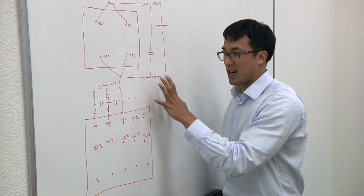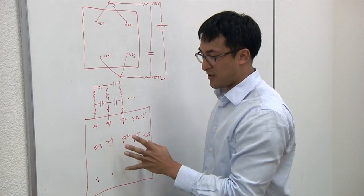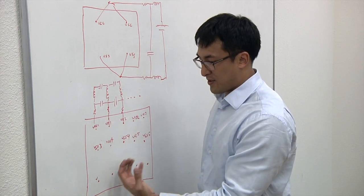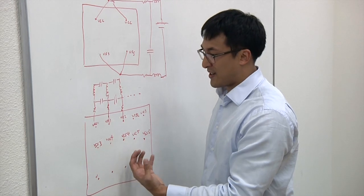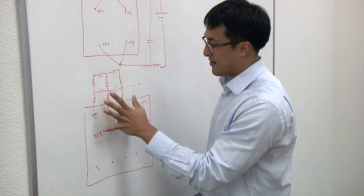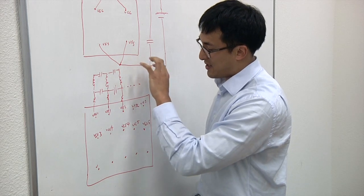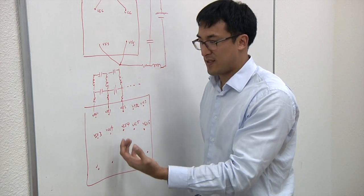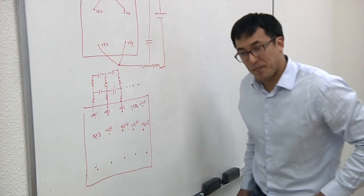So when you actually hook up a distributed package model to your die and we run a simulation, based on the currents that are drawn by the devices, those devices will actually see this entire power delivery network and this will impact how the charge is distributed and the resulting IR drops and EMs that you see on the interconnects.